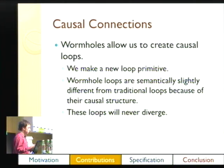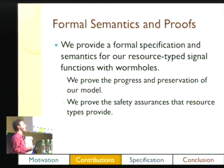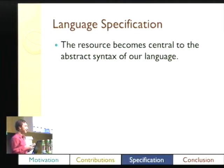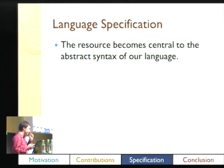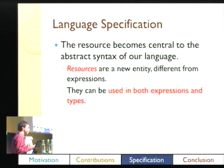We also provide a form of semantics and proofs of correctness, as well as the resource types. The language specification uses resource types as central to the abstract syntax. They're not expressions and not exactly types for our semantics — they're a new thing. They can be used in both expressions and types, but only in limited ways.